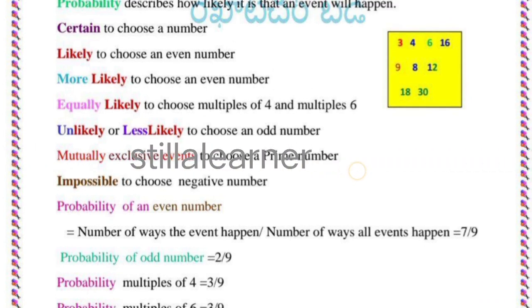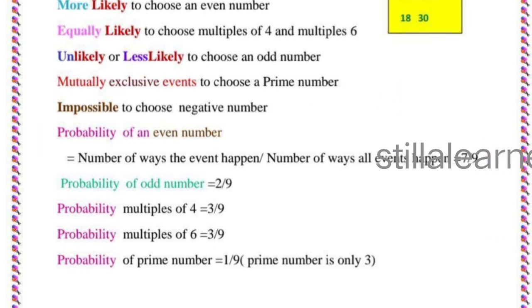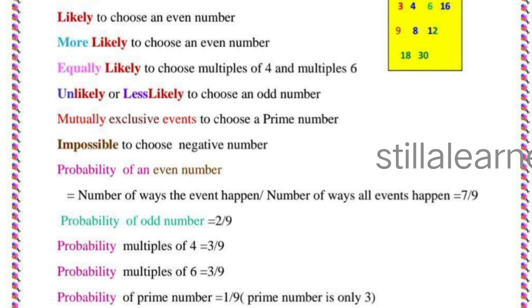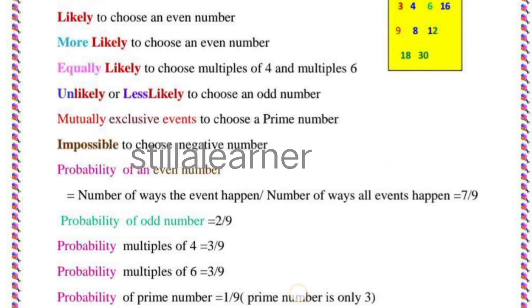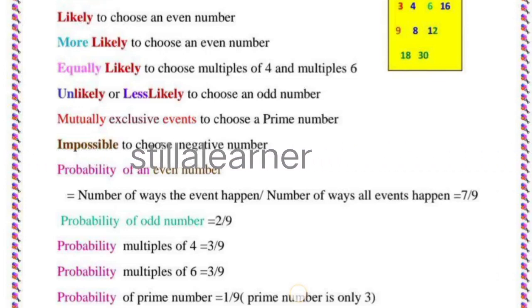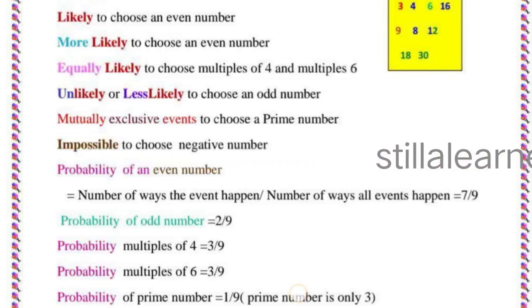So then, probability of odd numbers is 2/9. Just see in that worksheet paper how many odd numbers are there: only 3 and 9, both are the odd numbers which are 2 divided by 9. How many numbers? One, two, three, four, five, six, seven, eight, nine—that's why 9.